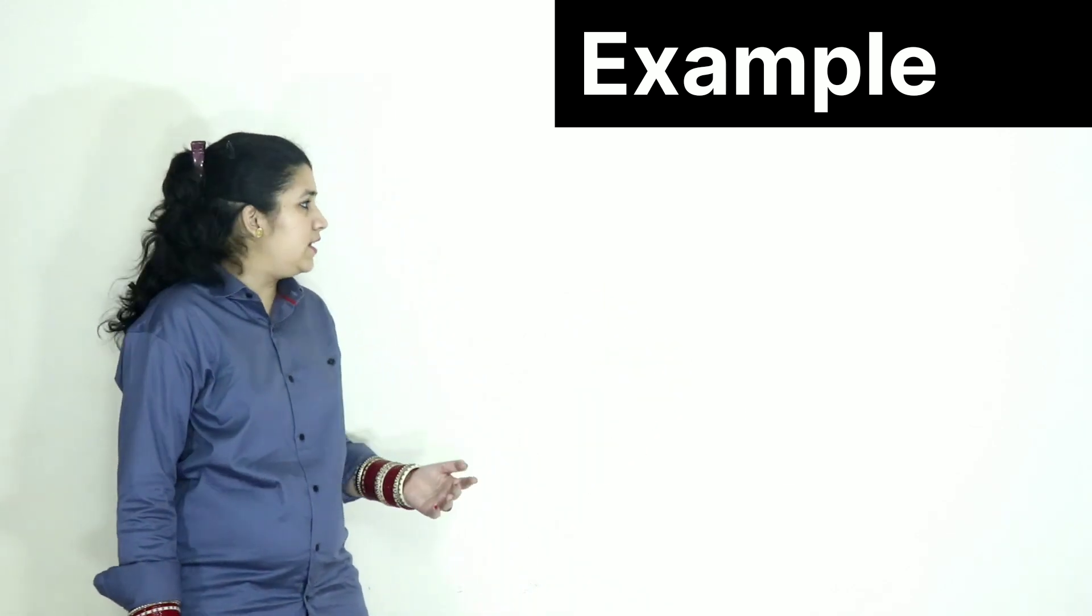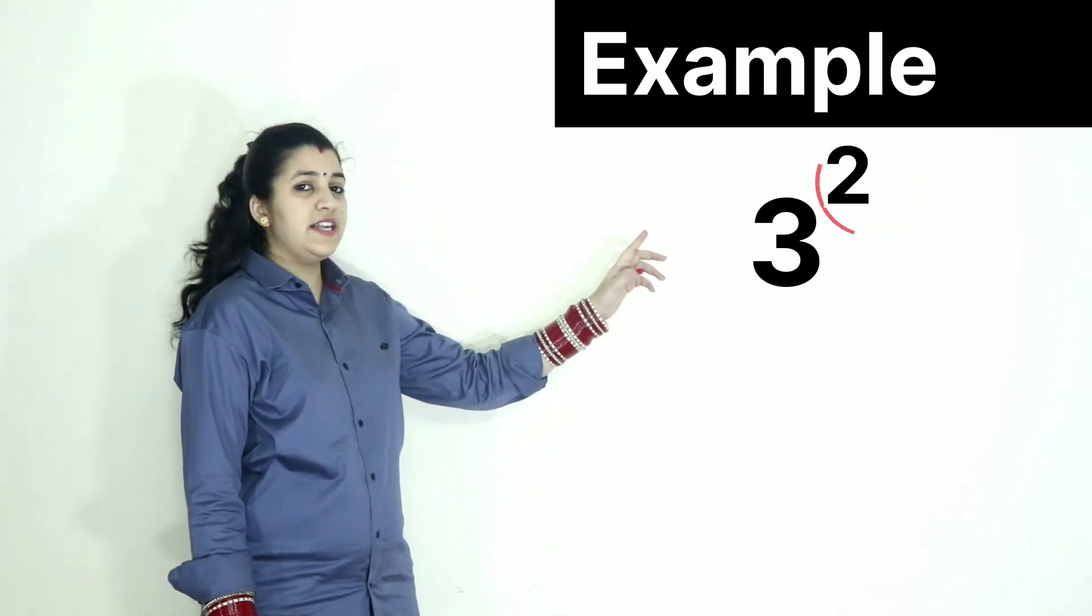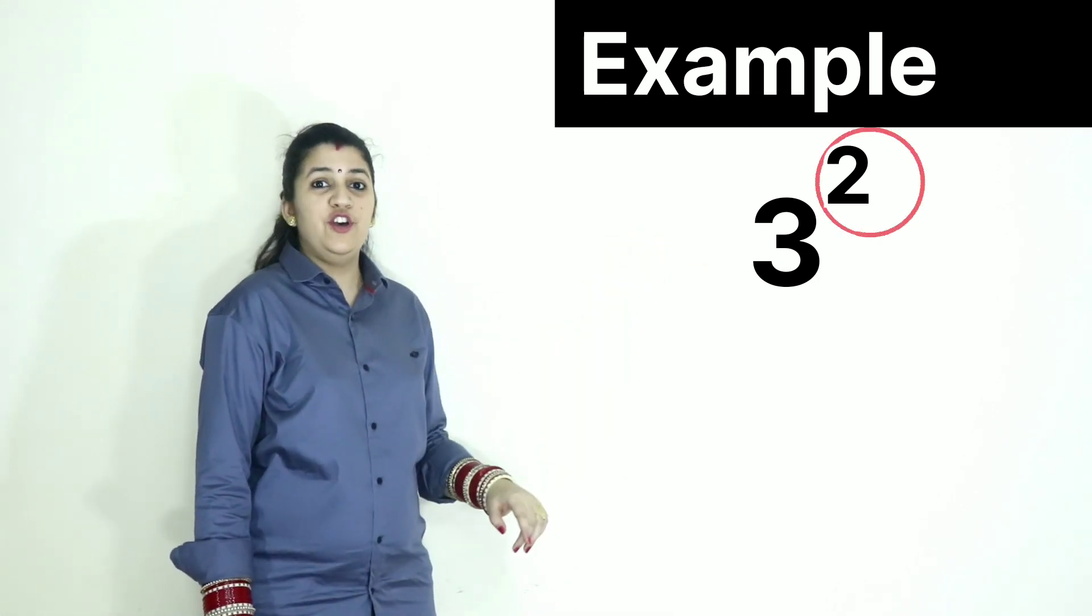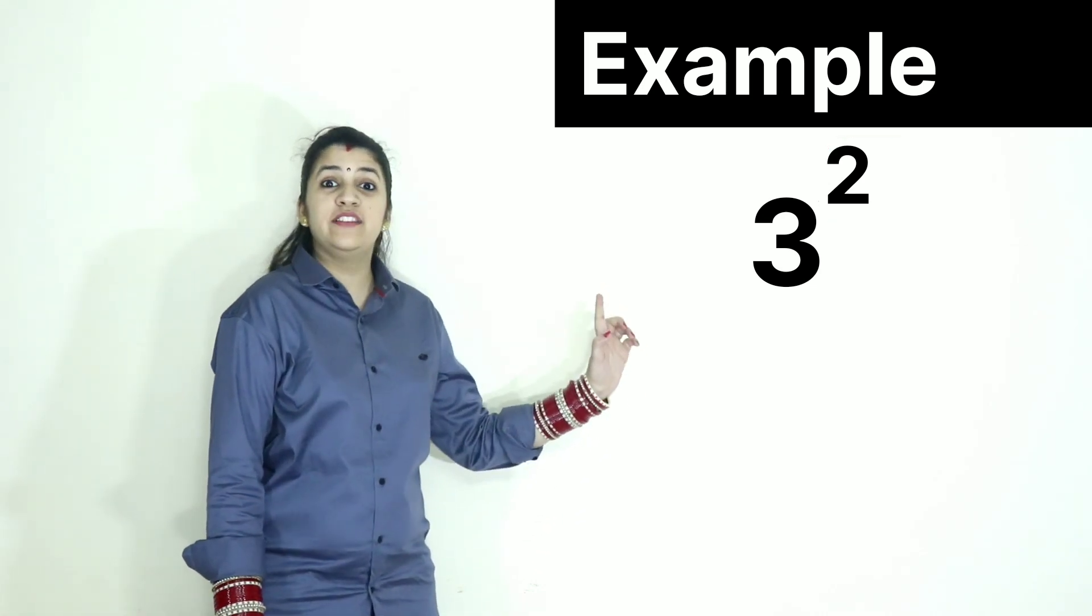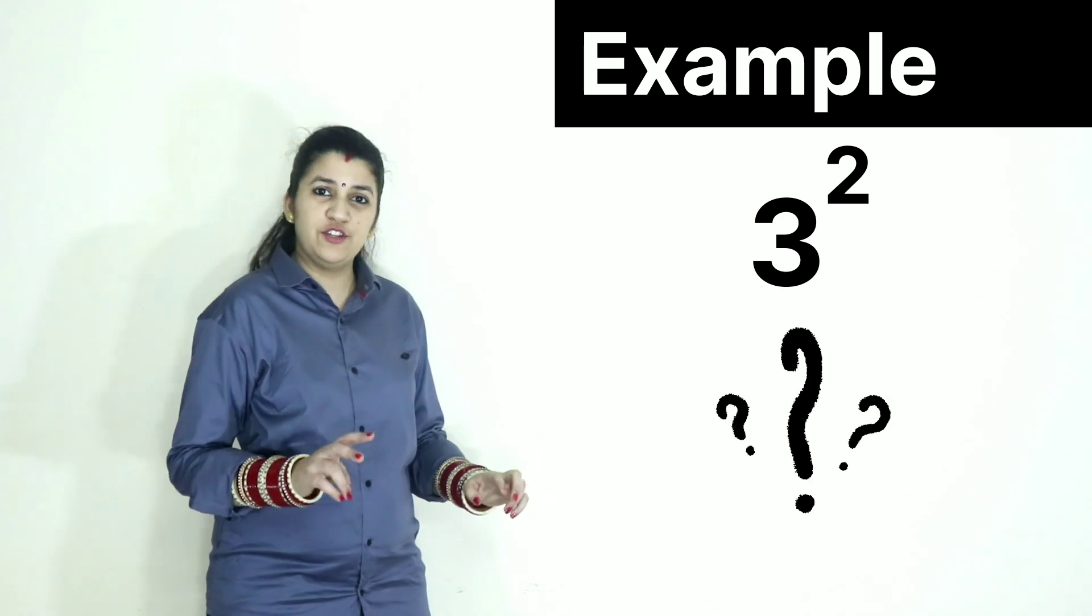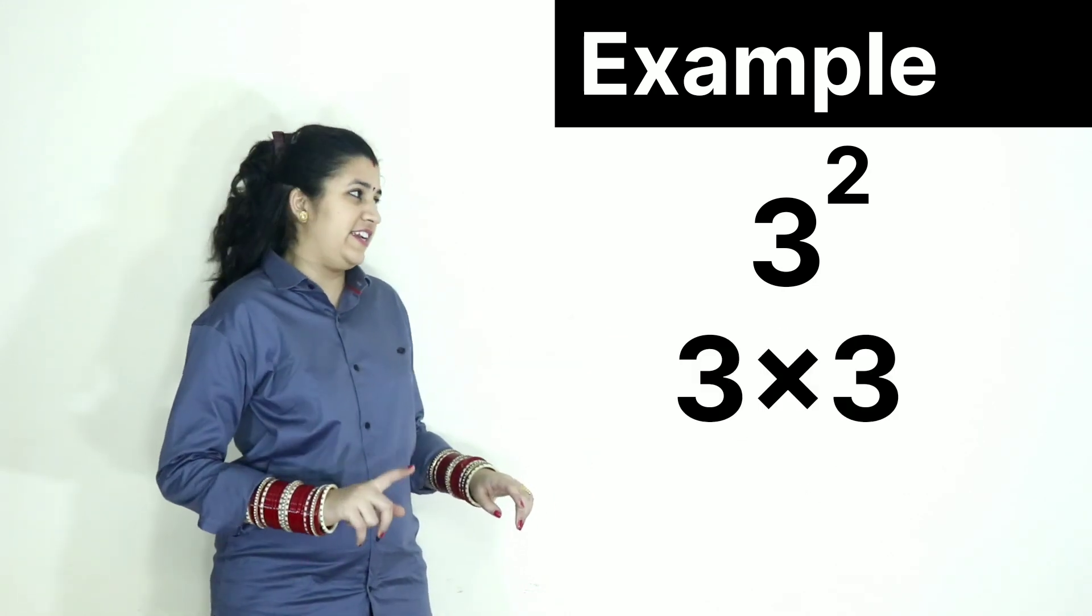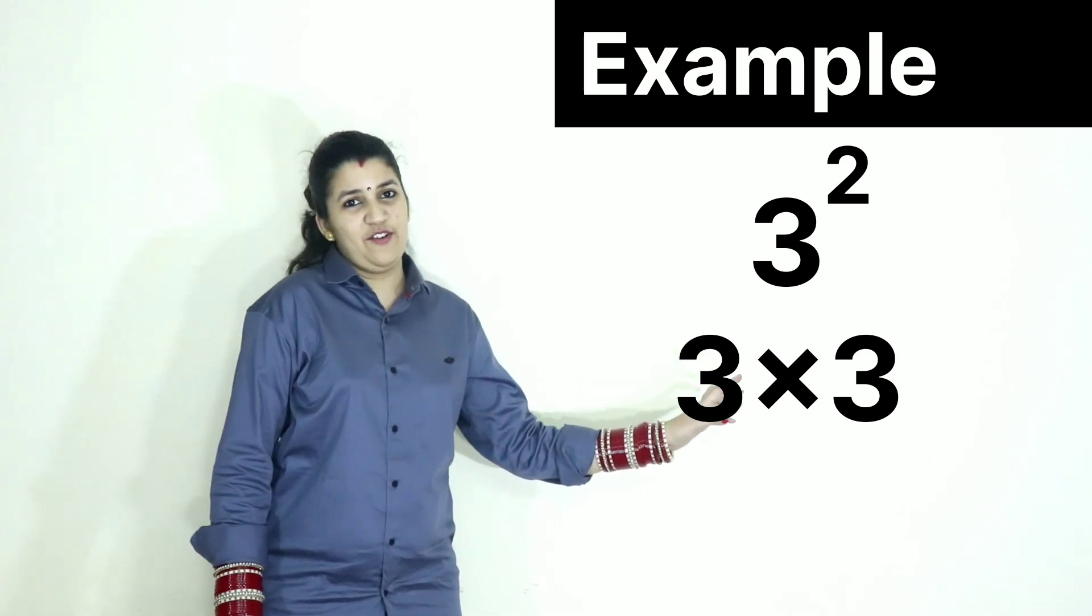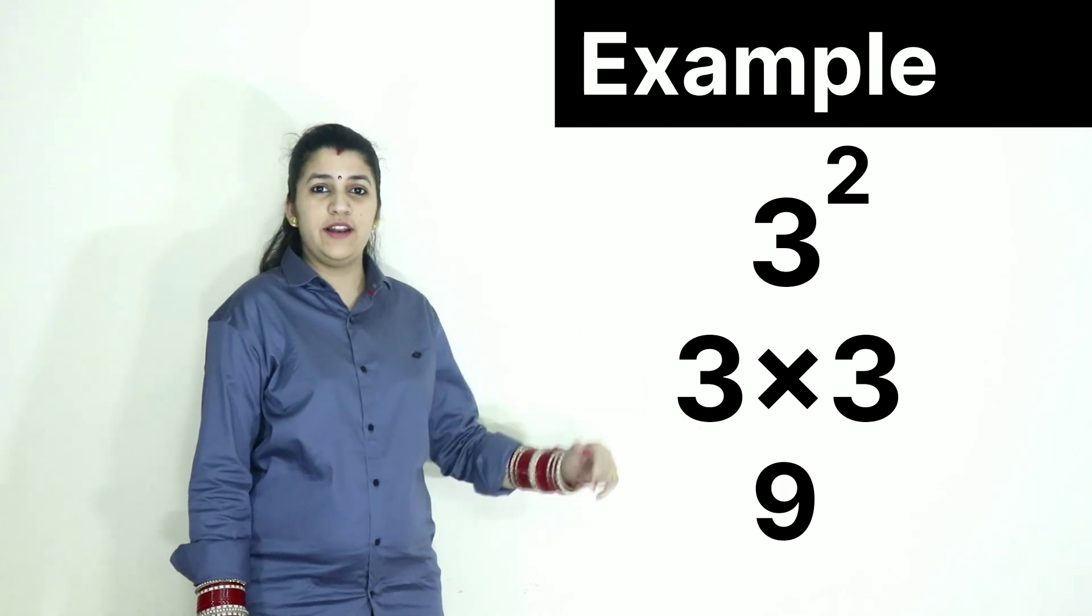Take another example: 3 raised to the power 2. Here the number 3 has the exponent 2. So what do we have to do? We have to multiply the number 3. How many times? 2 times. Not 3 into 2 or 2 into 3. It is 3 into 3. 3 into 3 is 9. So yes, 3 raised to the power 2 is 9.